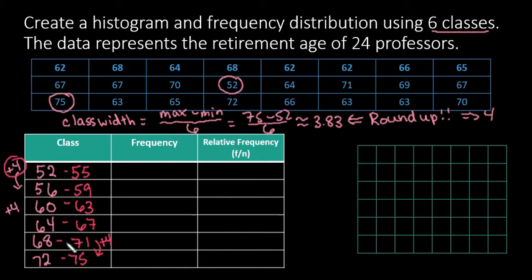When I create my histogram, I'll use the lower class limits of 52, 56, 60, 64, 68, 72, and 76.